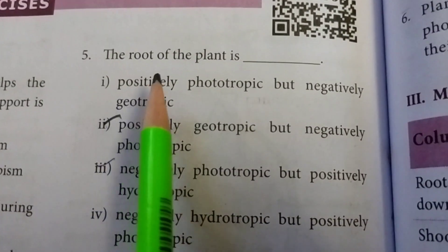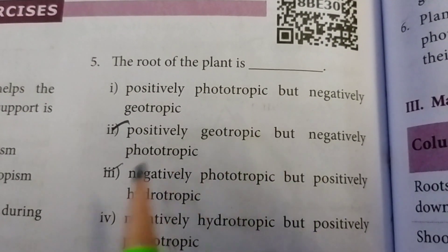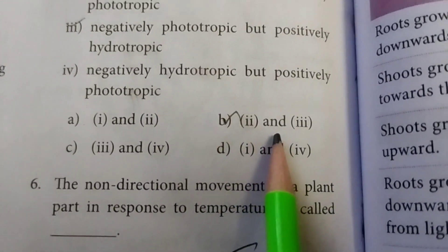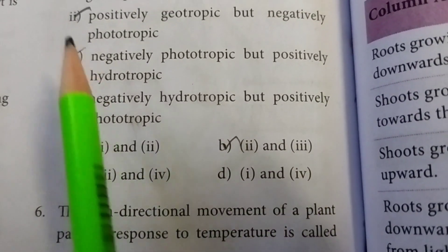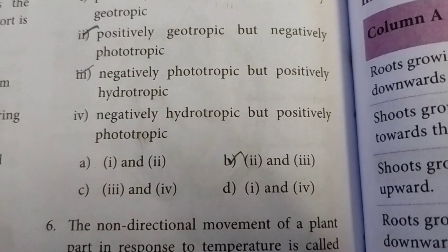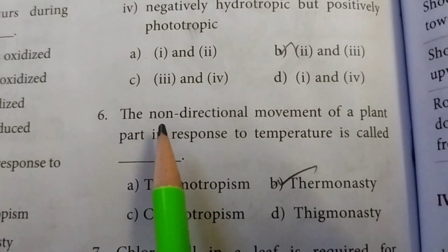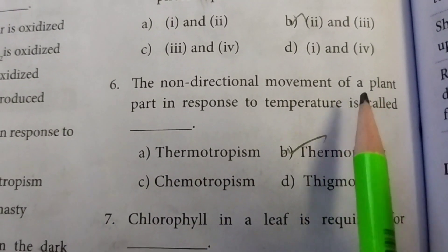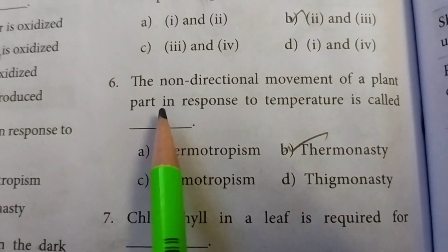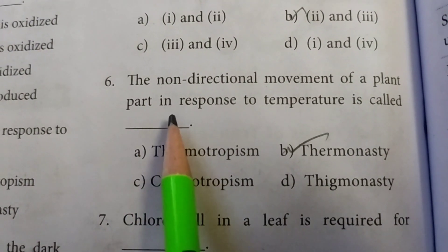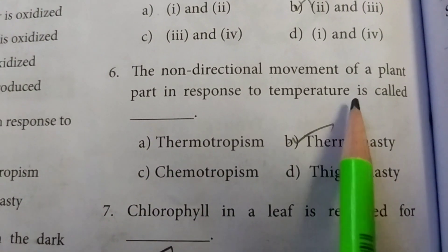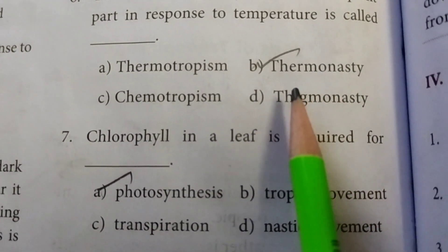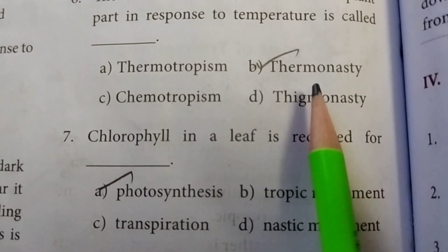Fifth one: the root of the plant — the answer is option B, 2 and 3. Sixth one: the non-directional movements of a plant in response to temperature is called thermonasty.